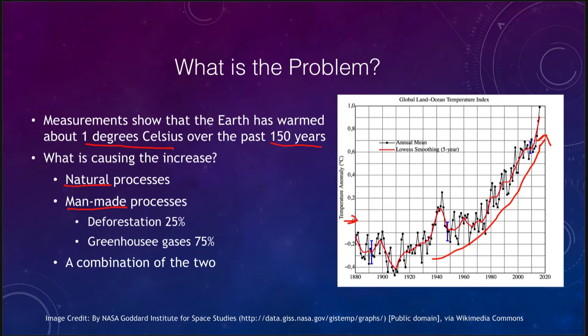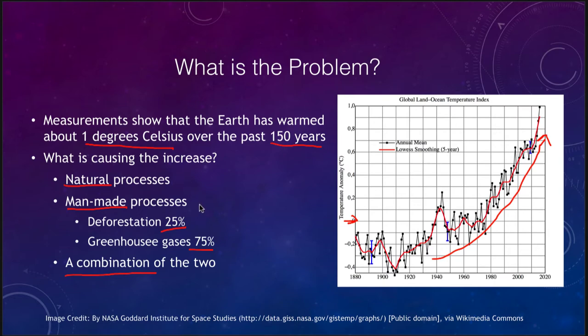It is very suggestive because we see this temperature rise occurring around the same time period that we have been really expanding our use of fossil fuels and therefore greenhouse gases. Current models show that deforestation would be responsible for about 25 percent of the warming and greenhouse gases would be responsible for about 75 percent. It could also be some kind of combination — could it be 50 percent and 50 percent, or 10 percent and 90 percent?